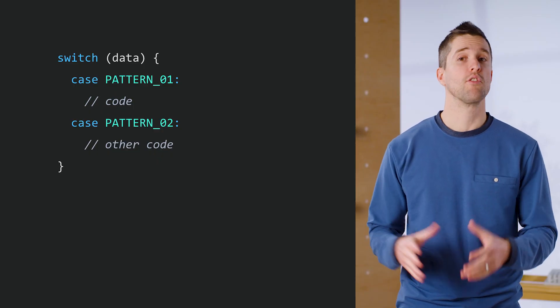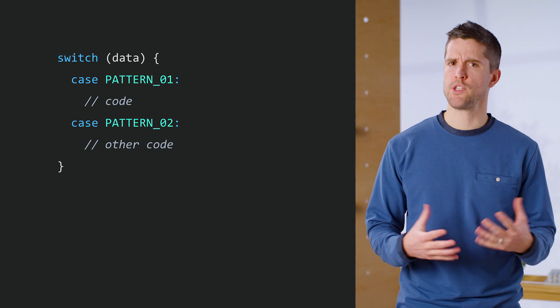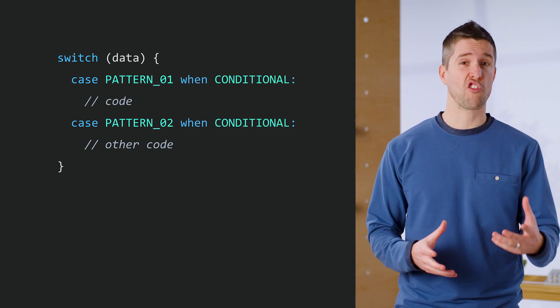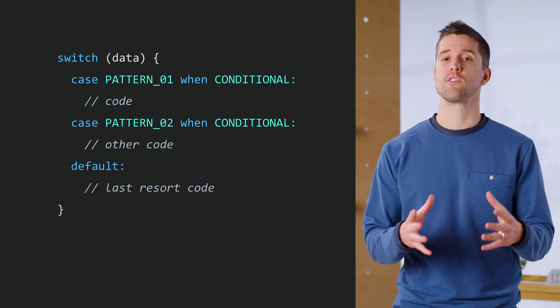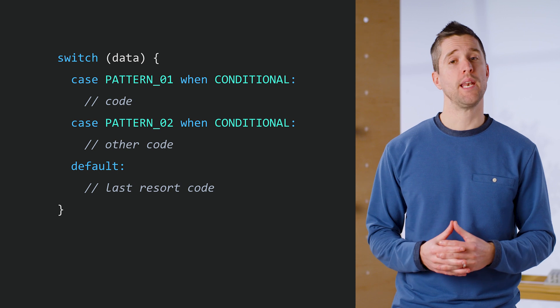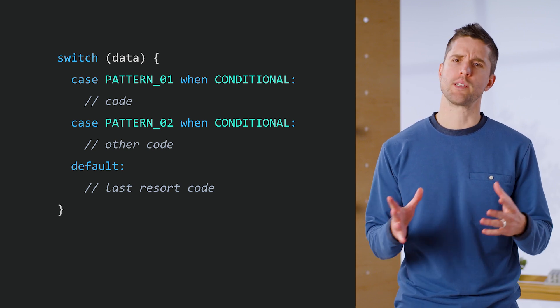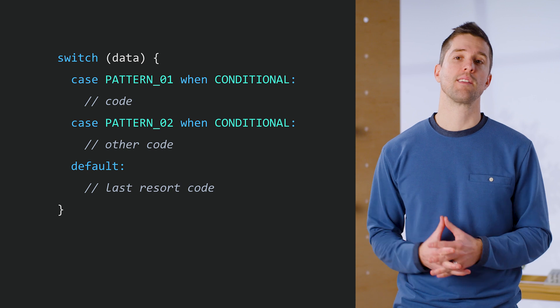In Dart, pattern matching happens in what are called refutable contexts, which means a place where data can be evaluated to either match the shape of a pattern or not. Typically, that means an if-case statement, a switch statement, or a switch expression. The switch statement and expression are more common, so let's start there. Patterns in a switch statement look like this. And because this is a typical switch statement, it can do all the cool things, like having guard clauses, which introduce additional requirements for control flow to move into the case block, and exhaustiveness checking, which prevents you from accidentally omitting possible scenarios. For more info on switch statements and exhaustiveness checks, visit the links in the video description.